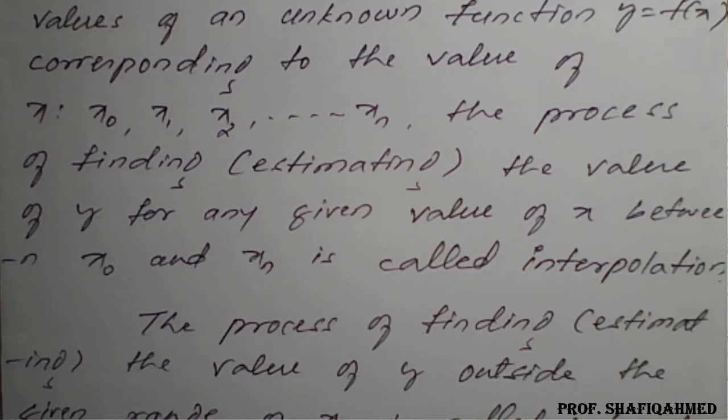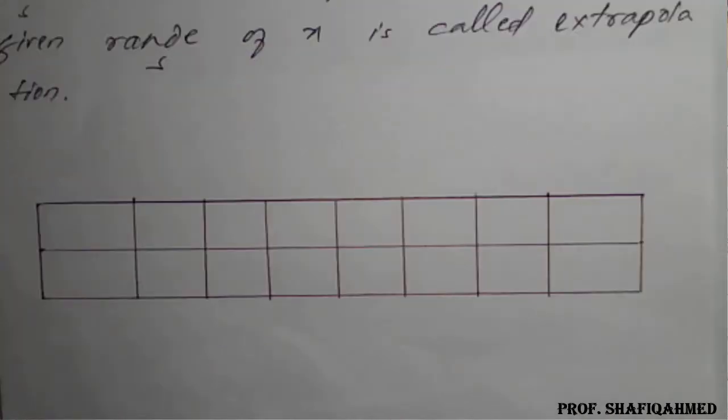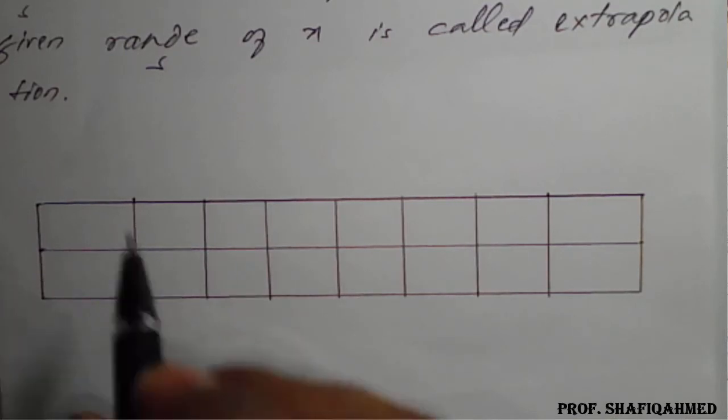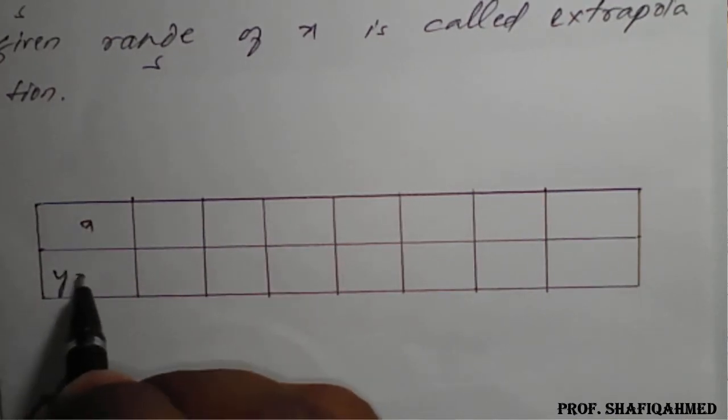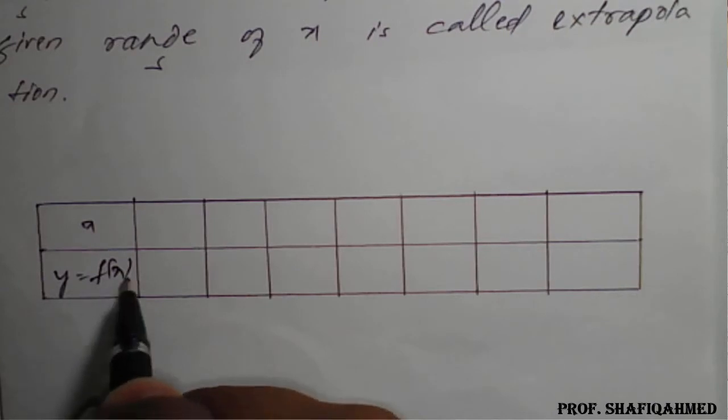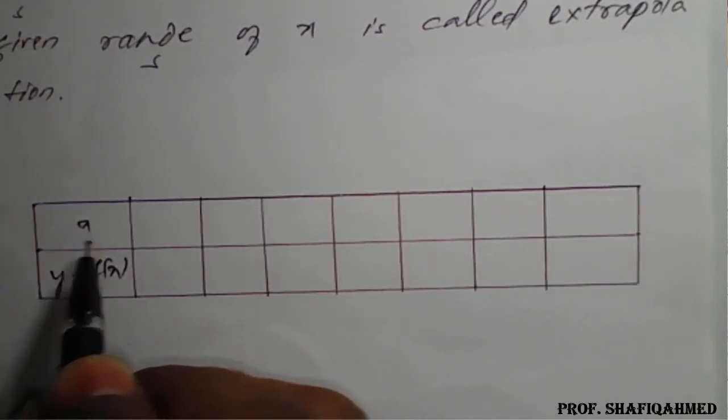So, for example, I will take an example. x value, so y equals f of x, either y value or f of x, both are same. So, this is x value here.